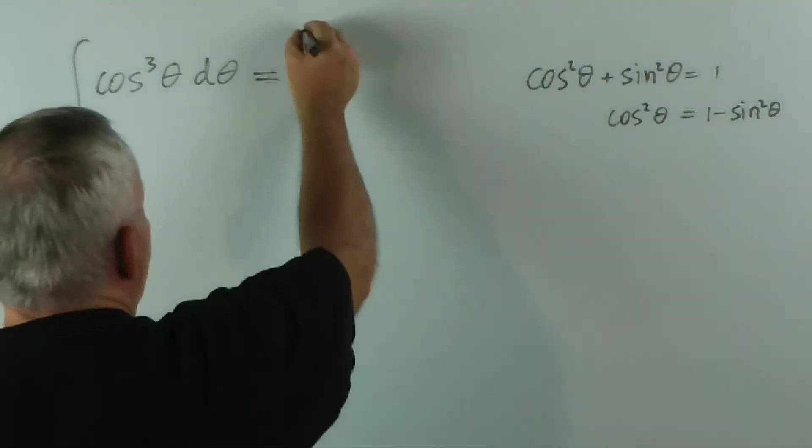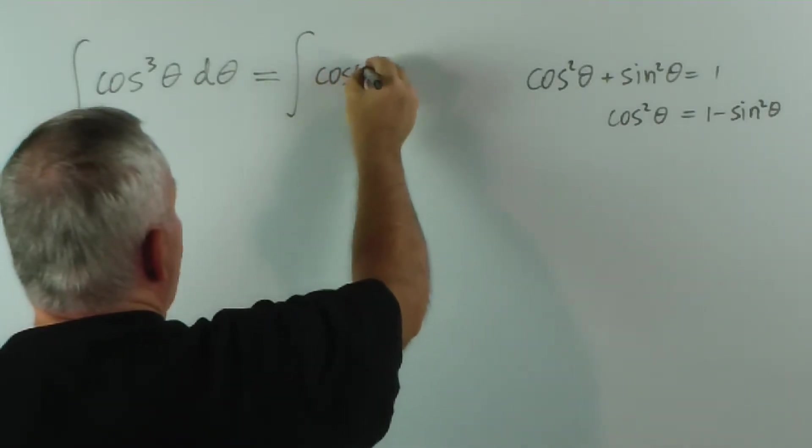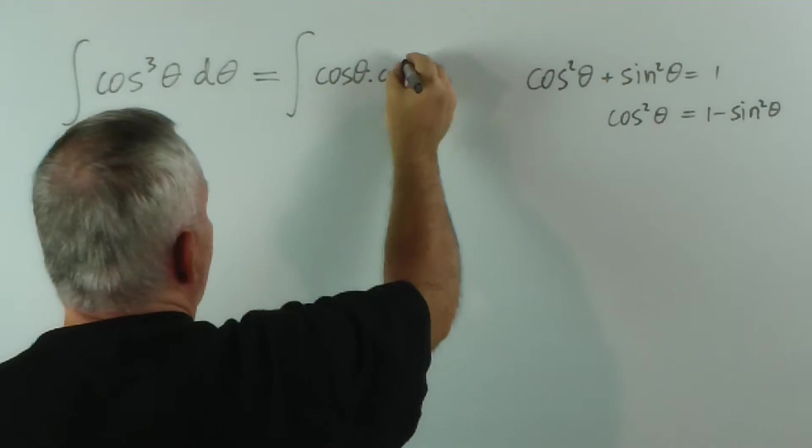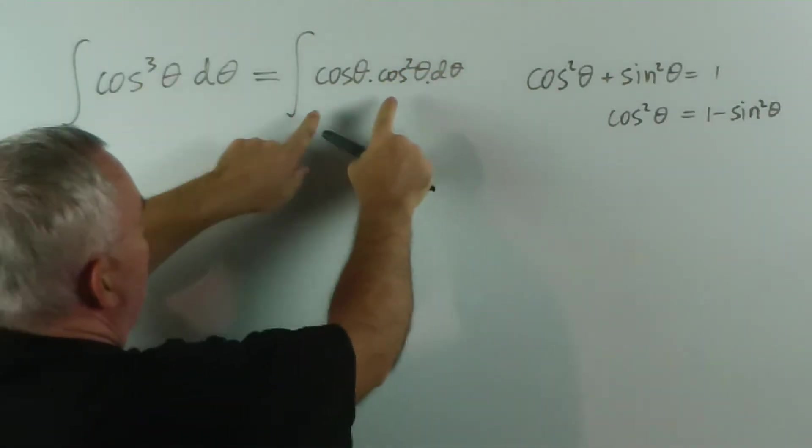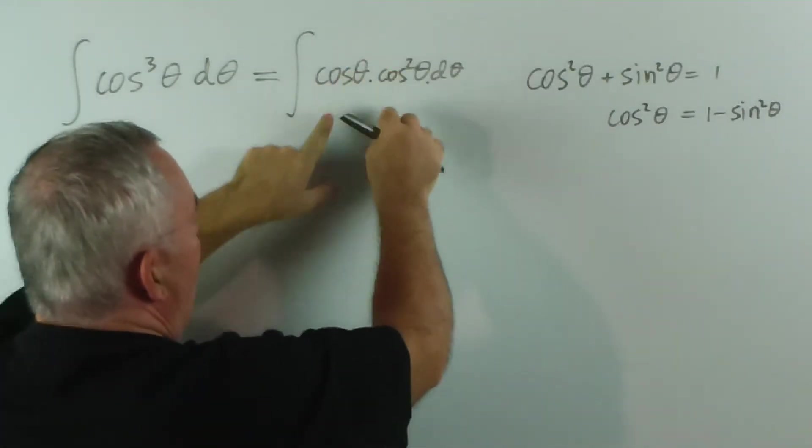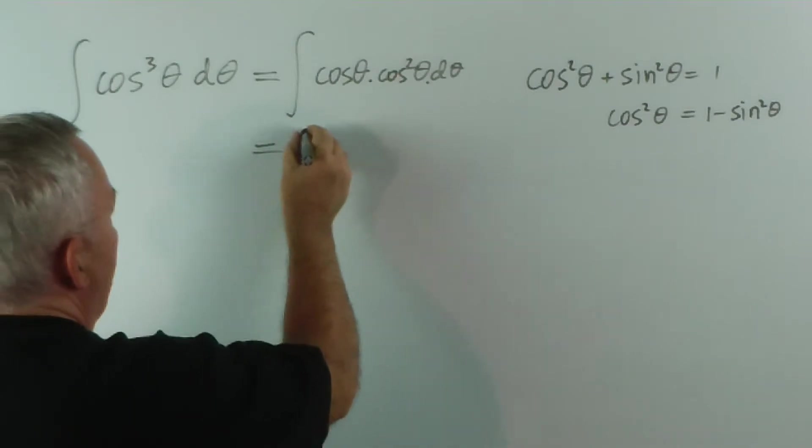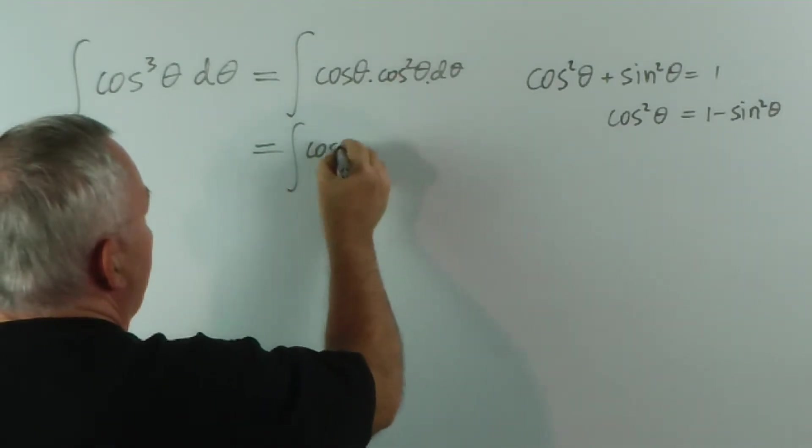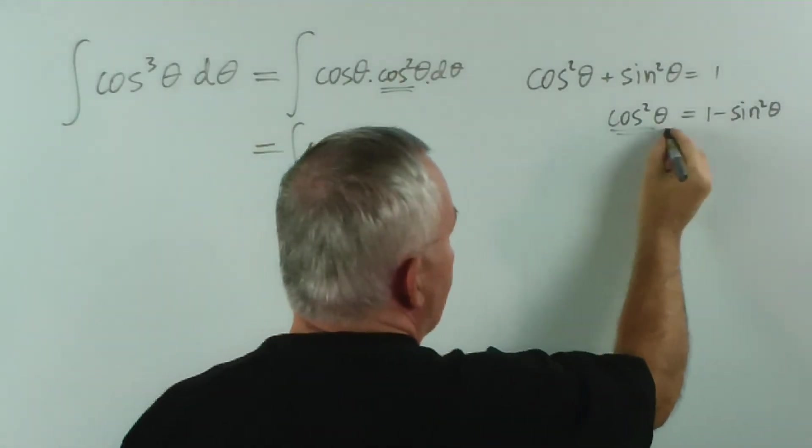So, let's see what we get here. Here we get cos θ times cos squared θ dθ. I'm just breaking the cos cubed up into cos to the 1 θ times cos squared θ. And then I'm going to substitute — not the cos θ, but the cos squared θ — I'm going to replace with this.